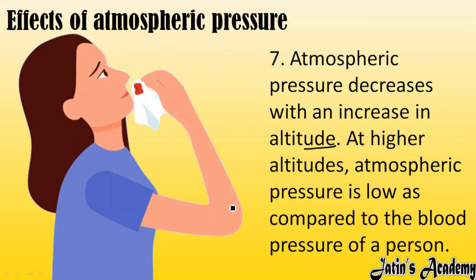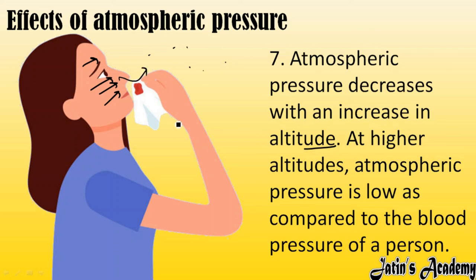Atmospheric pressure decreases with increase in altitude. When we move to higher altitudes, atmospheric pressure reduces. Our blood exerts pressure from inside, creating a region of high pressure inside the body, while outside is a region of low pressure. Since liquids move from higher pressure to lower pressure, blood starts moving outward. Our nose is the opening, so blood starts coming out from the nose — this is why nosebleeds occur at high altitudes due to decreased atmospheric pressure.